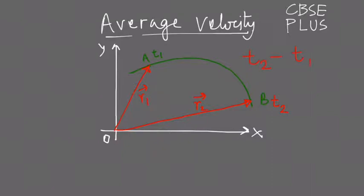From reaching from point A to point B, what time it took? The time it took is T2 minus T1. This is the total time it took. Now let's see what is the displacement of the object when it starts from A and reaches B.